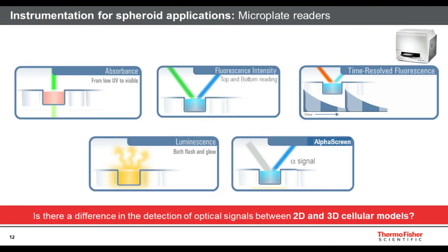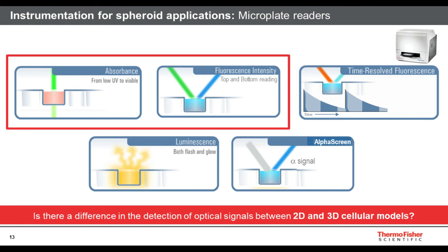Now let's briefly discuss the technologies that can be read with microplate readers. Most multimode readers available to scientists can measure optical signals — mostly absorbance, fluorescence, and luminescence. Varioscan Luxe can also measure time-resolved fluorescence (TRF) and AlphaScreen. Today we will focus on the two most widely used technologies: absorbance and fluorescence measurements.